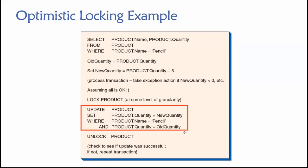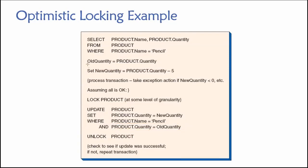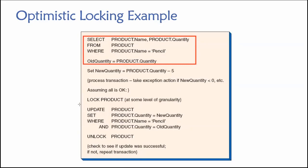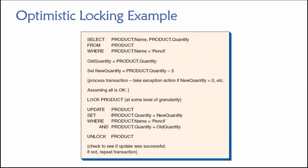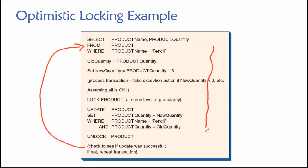When would this be false? It would be false if at some point between fetching the quantity and our attempt to update it, somebody else changed the quantity — a conflict occurred between these two parts of our transaction. In that case the update will fail, no records will be changed, and in optimistic locking we have to loop back and start over again. We go through the steps over and over until eventually the update succeeds.